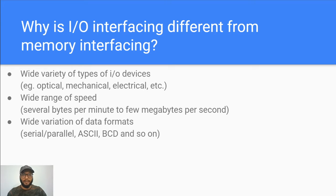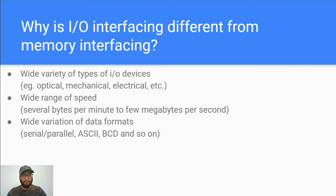Why is IO interfacing so different? First of all, IO devices have a wide variety of types. Some of them are electrical, some are electromechanical, some are electronic, some are optical and so on. The technologies used are different.